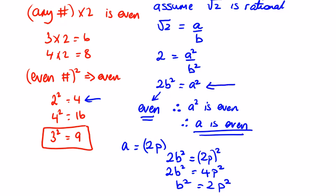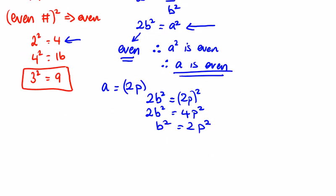And similar to this line here, 2p squared has to be even. Therefore, b squared is even. Therefore, b is even.